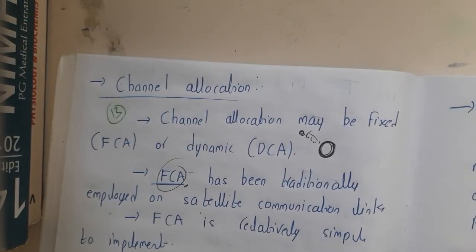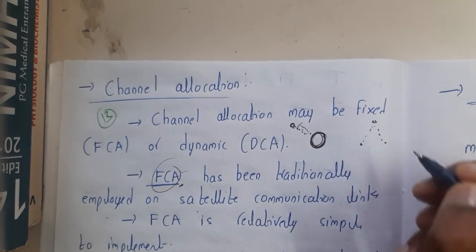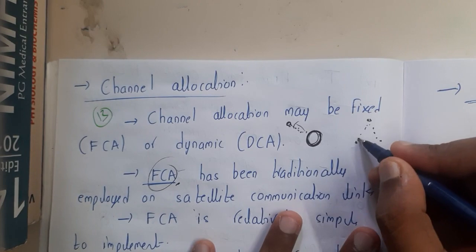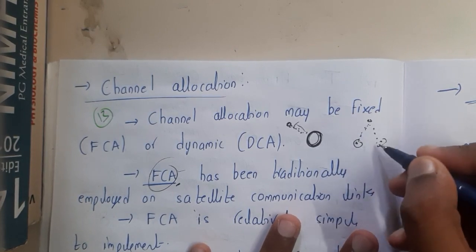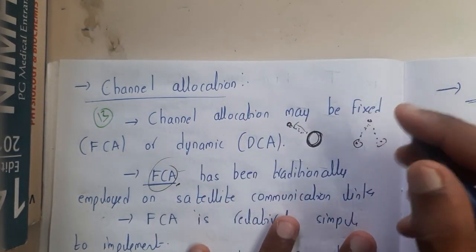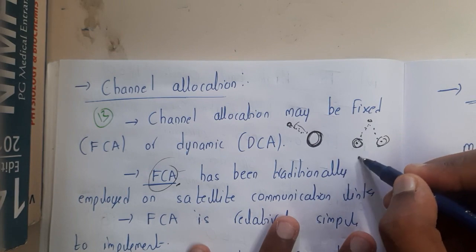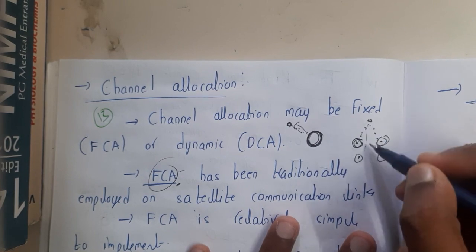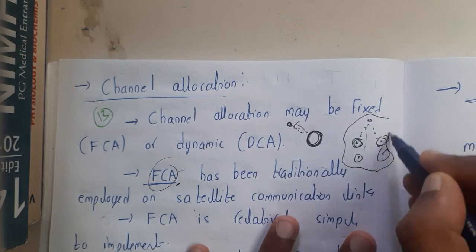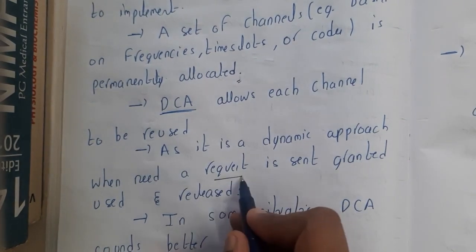For dynamic channel allocation, assume you want to communicate with your friend using satellite communication. In that situation you will be given only a limited time — you and your friend will not be connected for infinite time. Once your communication is done, someone else can connect. In this way, thousands of calls can run in parallel using the dynamic approach.